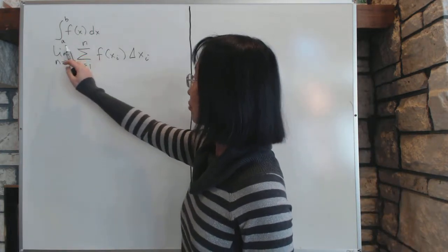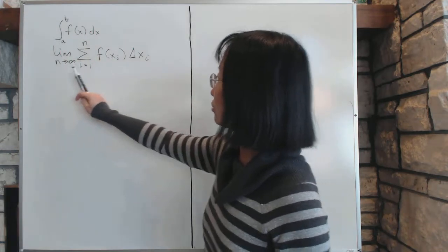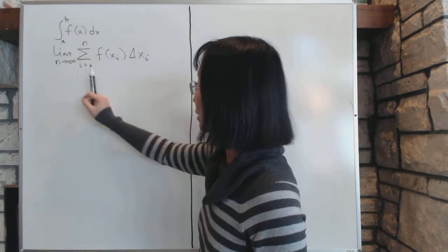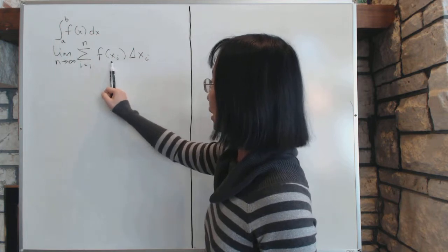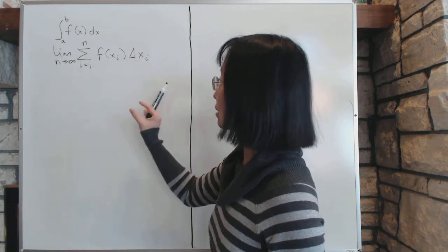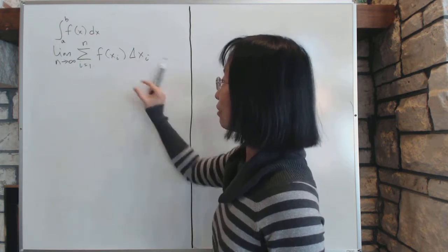The integral from a to b of f(x)dx equals the limit as n goes to infinity of f multiplied by small chunks of the divisions.